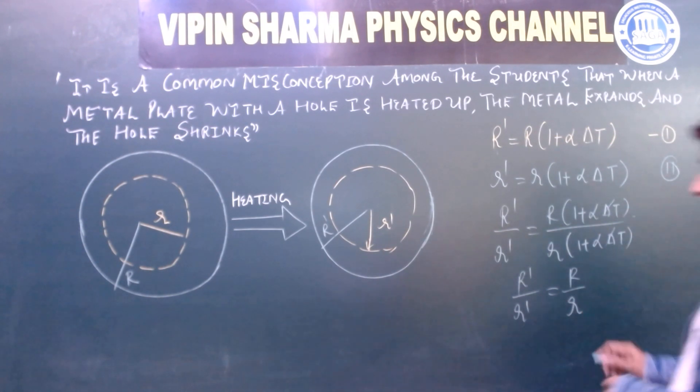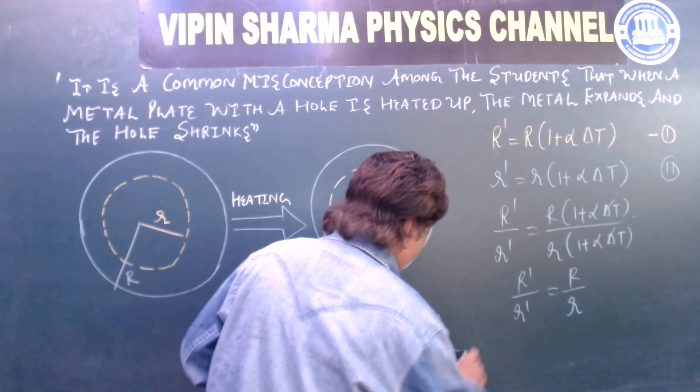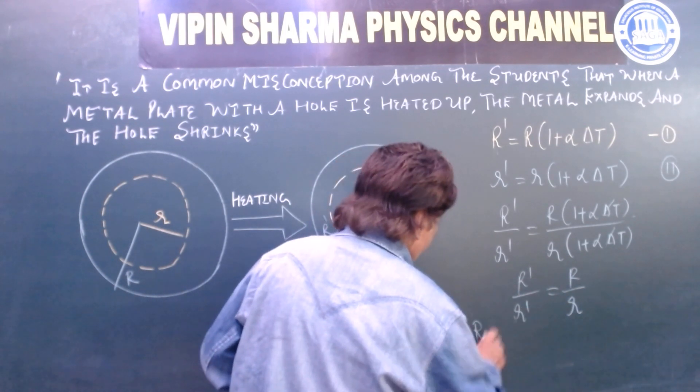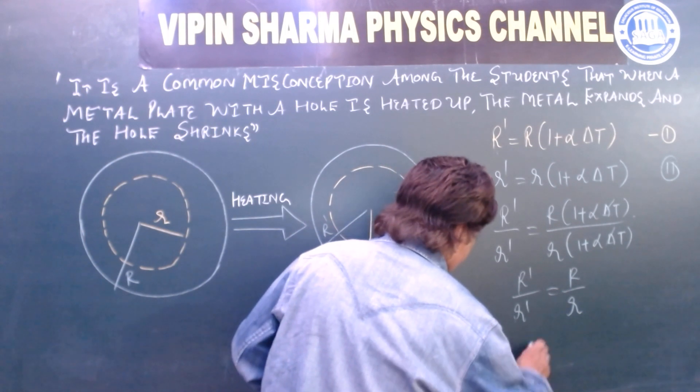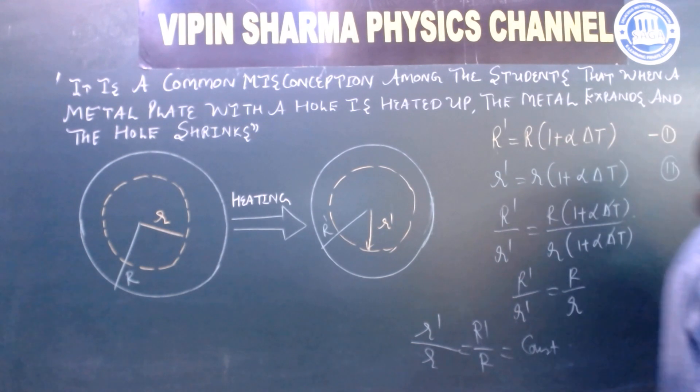r dash upon capital R dash equal to r upon capital R. This shows r dash upon capital R dash equal to r upon R, that is constant.